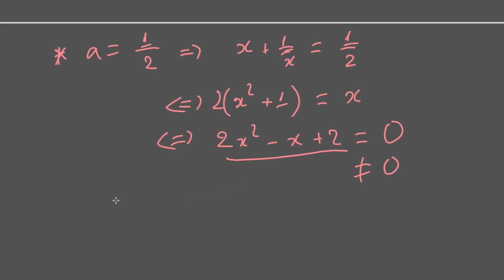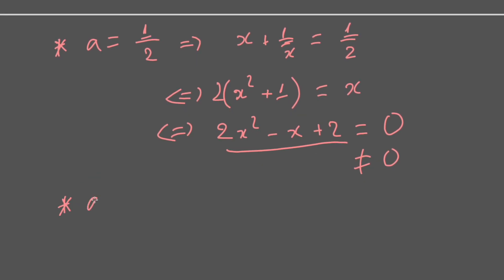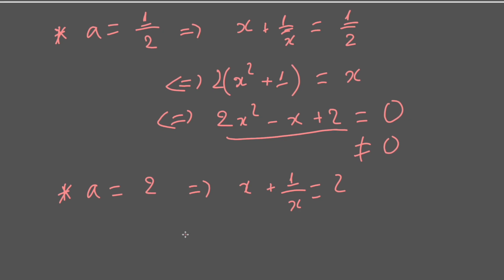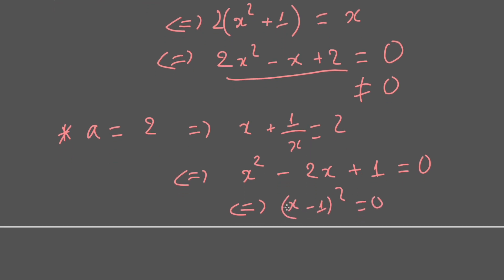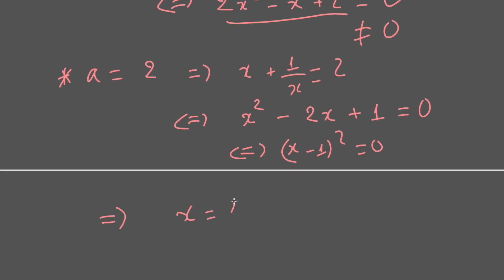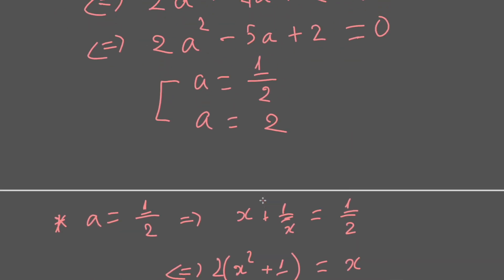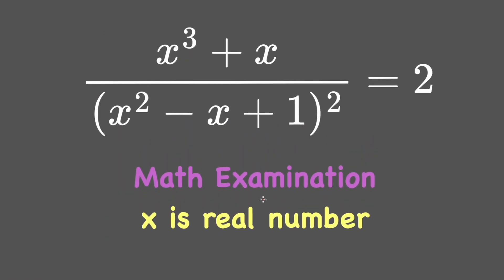For a = 2: x + 1/x = 2, which transforms to x² - 2x + 1 = 0, giving (x - 1)² = 0. Therefore x = 1 is the solution to the original rational equation. That's it — thanks for watching, see you later, bye!